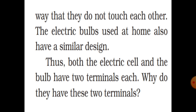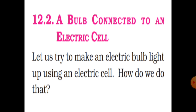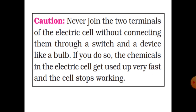The base of the bulb and the metal tip are the two terminals of the bulb. The two terminals are fixed in such a way that they do not touch each other. Electric bulbs used at home also have a similar design. Thus, both the electric cell and the bulb have two terminals each.